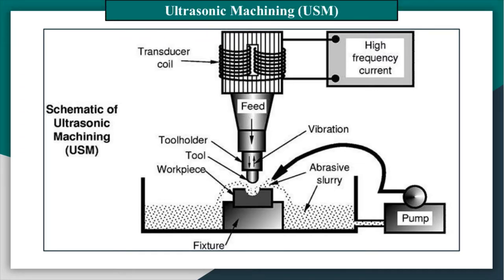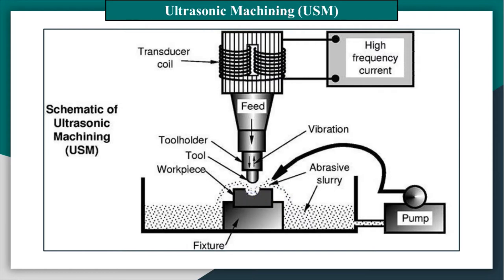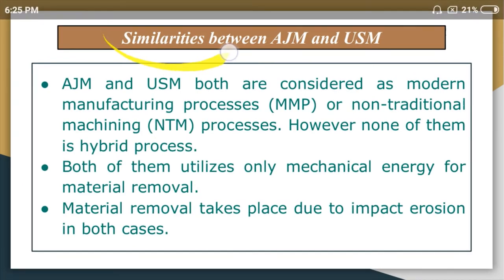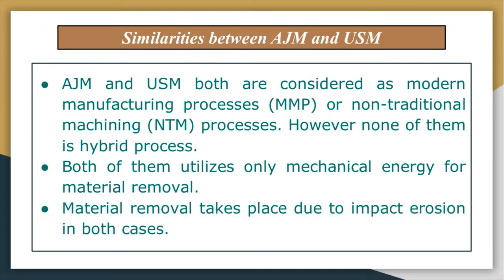In ultrasonic machining, abrasive slurry — that is, abrasive particles suspended in a liquid medium — is introduced in a small gap between the tool and the workpiece. The tool is given a particular shape based on the intended profile, and it is vibrated at a very high frequency with low amplitude above the workpiece, maintaining a small gap in between. The abrasives in the slurry erode and remove the material from the workpiece. This is the basic working principle of these two processes.